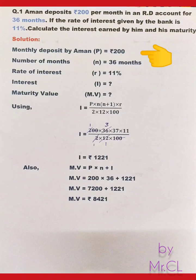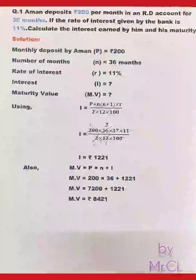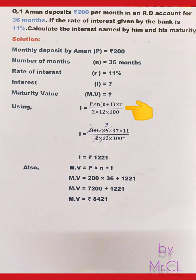Given: monthly deposit P = ₹200, number of months n = 36, rate of interest R = 11%. We need to calculate interest I and maturity value. We will use the interest formula: I = P × n(n+1) × R ÷ (2 × 12 × 100).